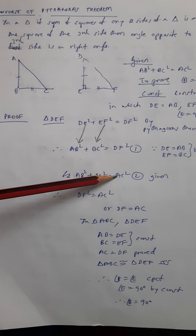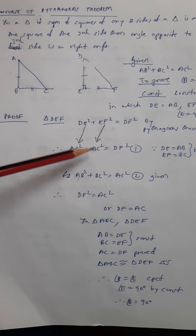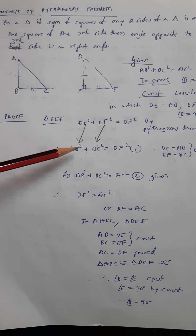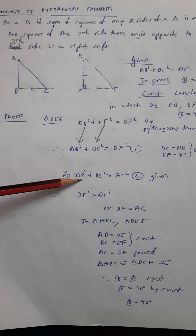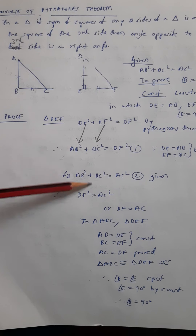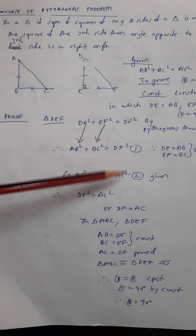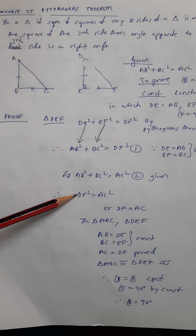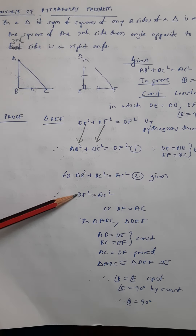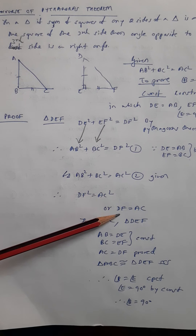AB² + BC² = AC² is already given. Comparing the two equations, the left-hand sides are the same, so the right-hand sides must be equal. Therefore DF² = AC², and cancelling the squares gives us DF = AC.